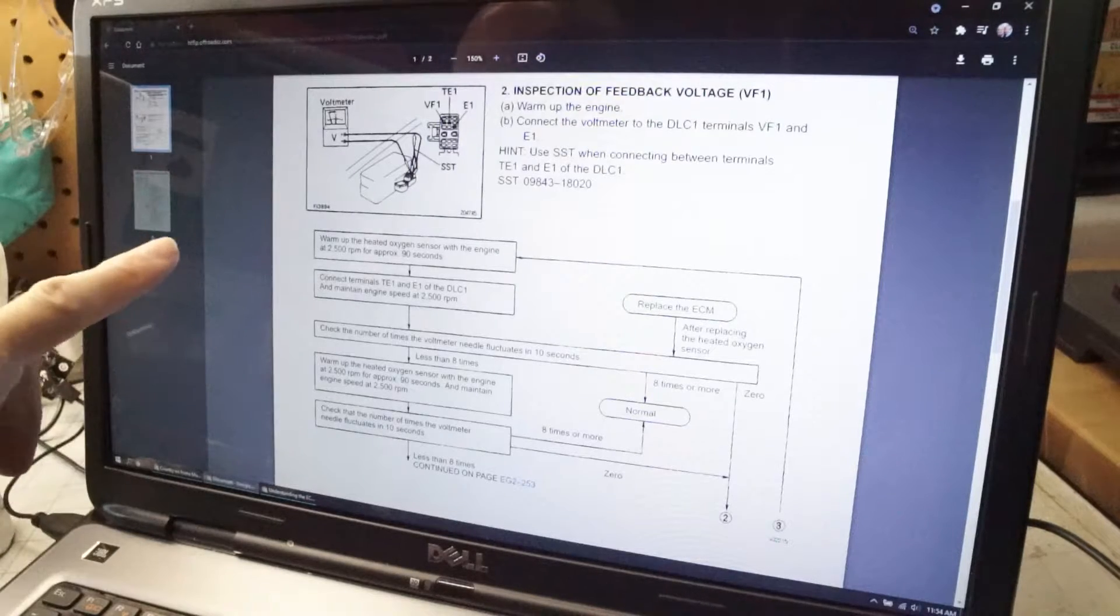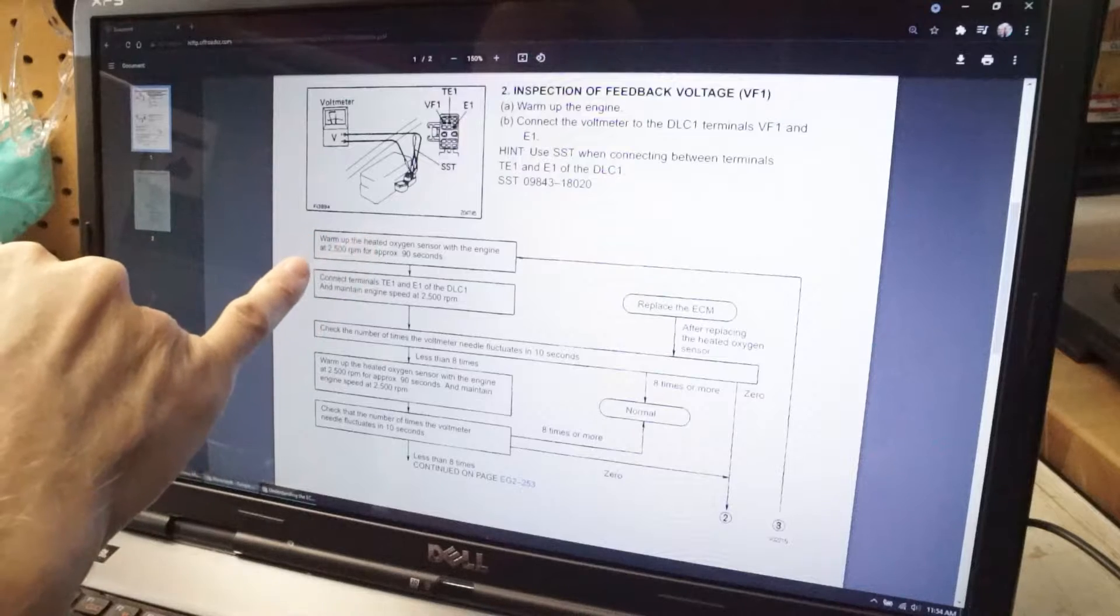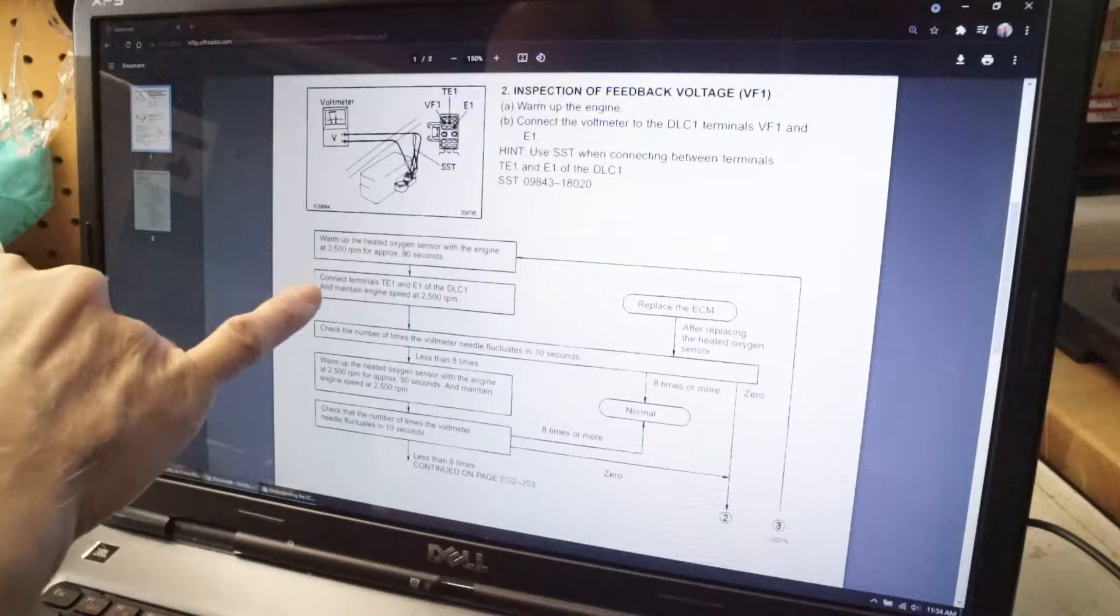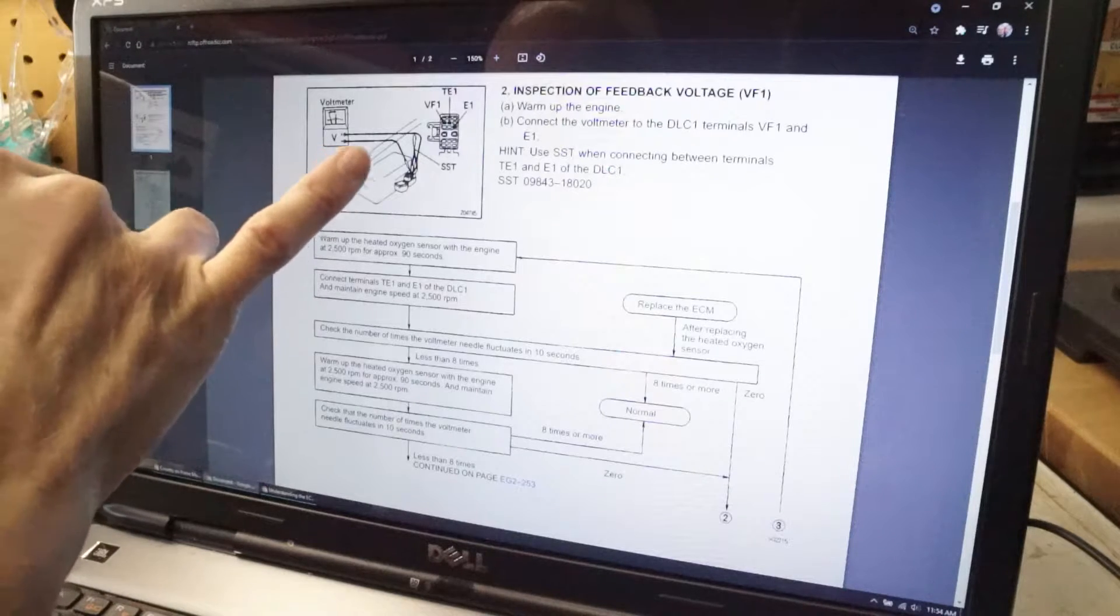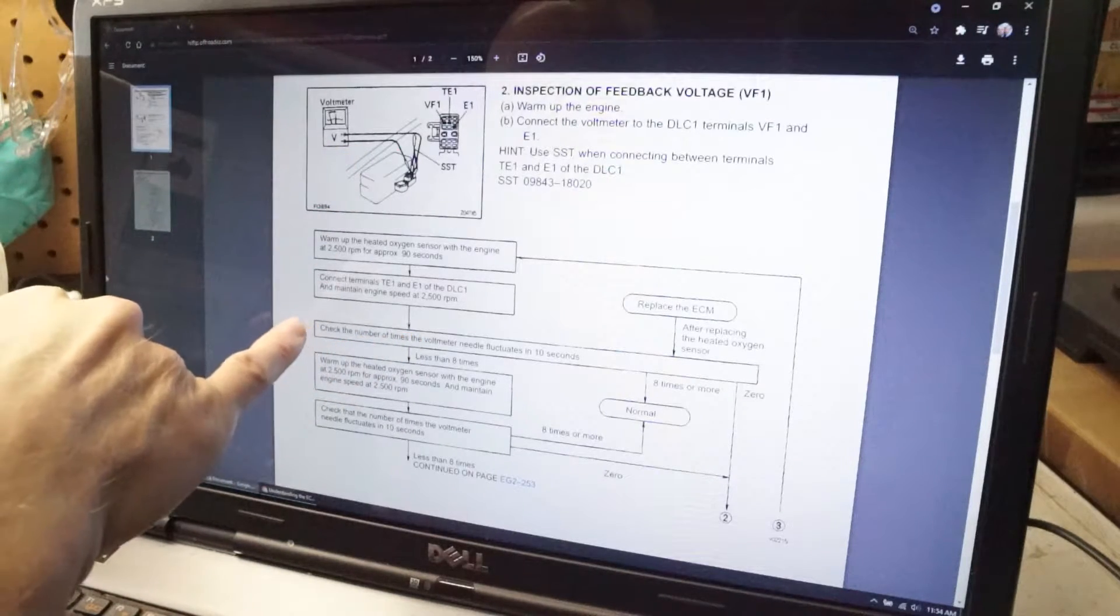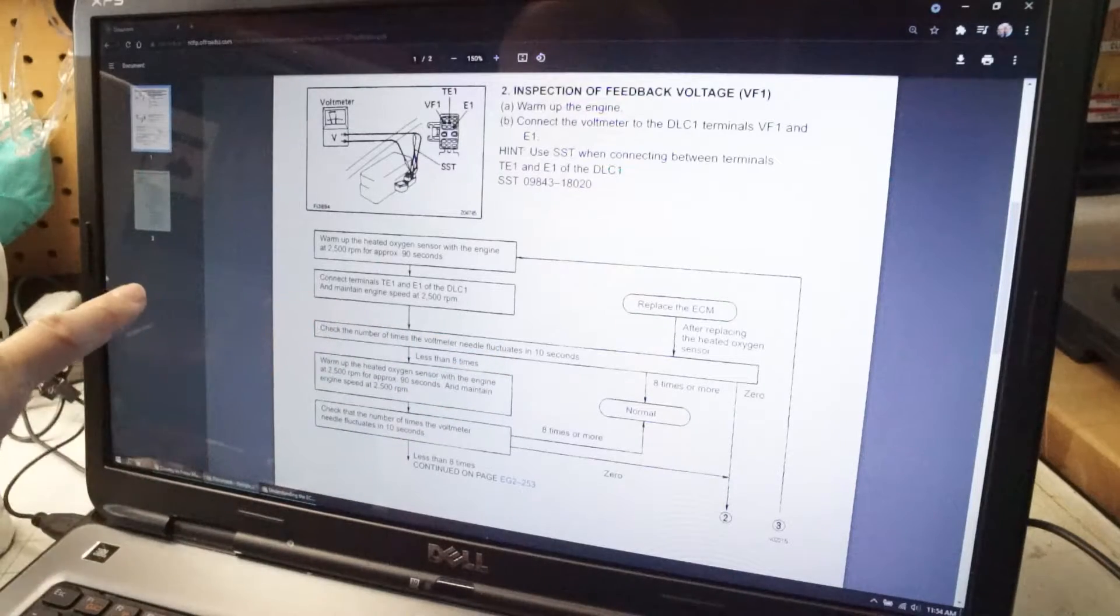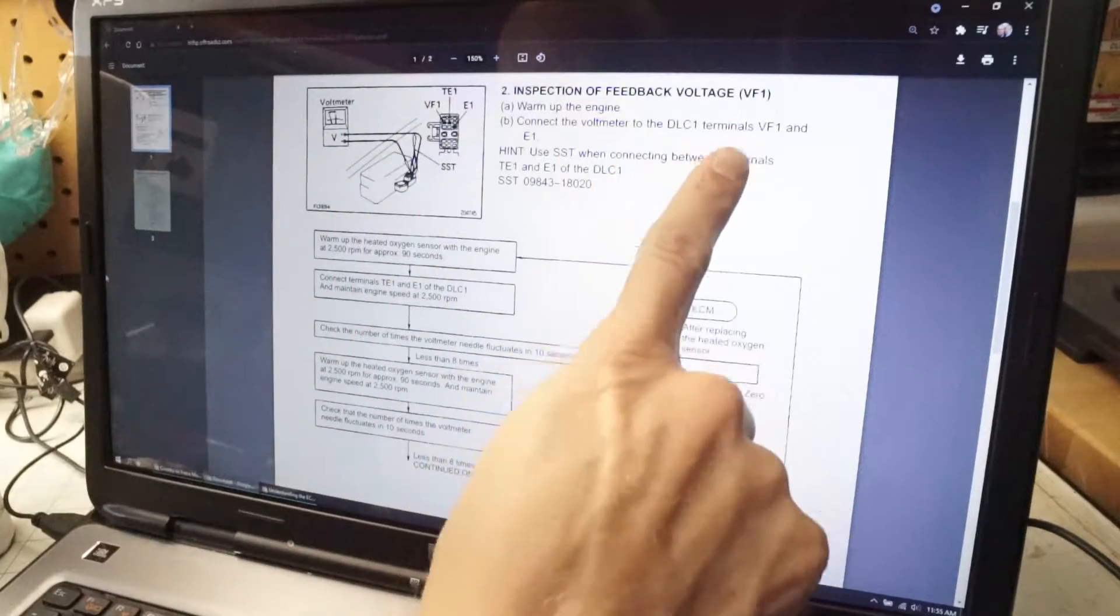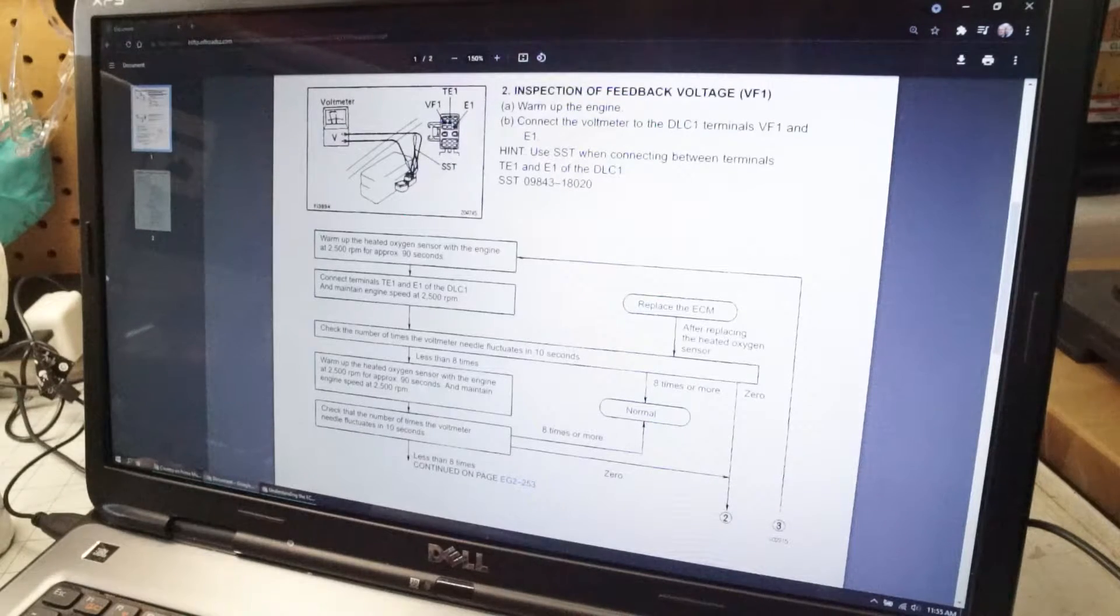So it looks like the next thing we need to do is warm up the engine, run it at 2500 rpm for 90 seconds, connect TE1 and E1 in the service connector, and check the number of times the voltmeter fluctuates in 10 seconds. That's using VF1 and E1 with the voltmeter. Let's get that hooked up and see what happens.